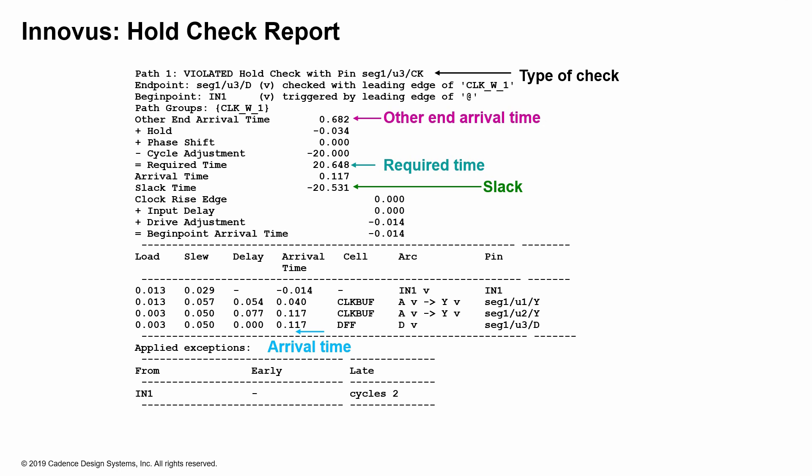Especially when you don't have full clock information, the other end arrival time is basically just the delay through the buffers to the capture clock end. In this case, we are using a multi-cycle path, so the cycle adjustment is shown as minus 20. The other end arrival time plus the hold check value, plus the phase shift of zero (it's the same clock), plus the cycle adjustment from the multi-cycle path, gives you the required time.